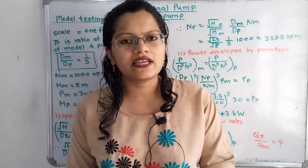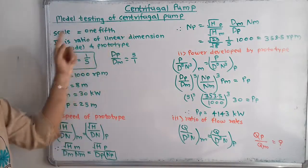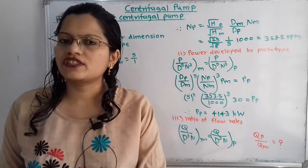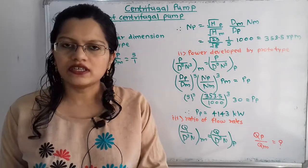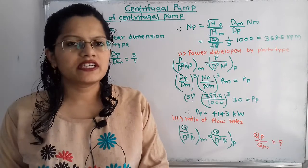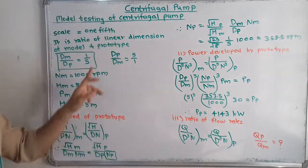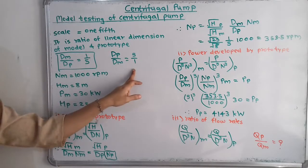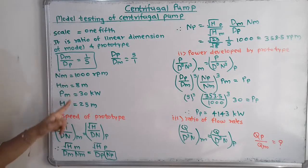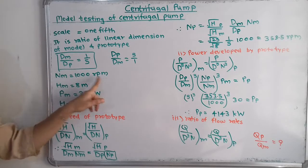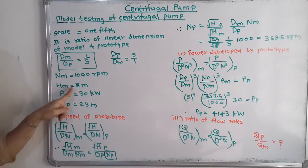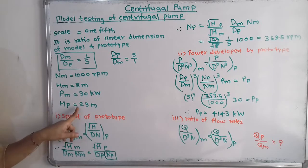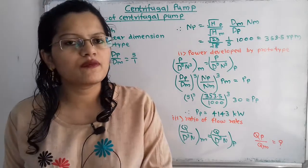We will first understand the given data. The scale is given as 1/5th, which is the ratio of linear dimensions of model to prototype. Taking diameter D as the linear dimension, D_m / D_p = 1/5, so D_p / D_m = 5. For the model: speed N_m = 1000 rpm, head H_m = 8 meters, power P_m = 30 kilowatts. The head of the prototype H_p = 25 meters.